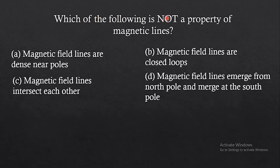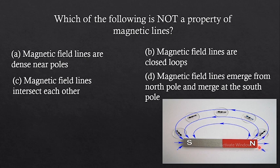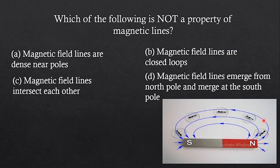The next question: which of the following is NOT a property of magnetic field lines? Option A: magnetic field lines are dense near the poles — looking at the bar magnet diagram, this is correct because at the poles there are many field lines close together. Option B: magnetic field lines are closed loops — looking at the figure, this is also correct.